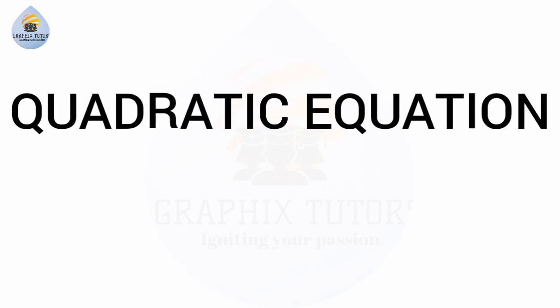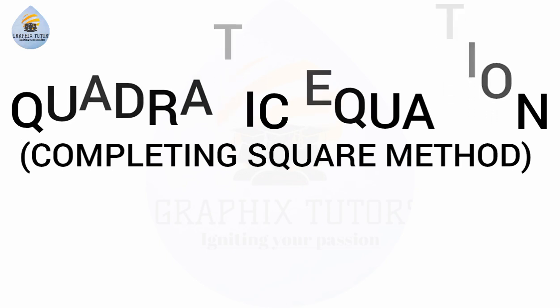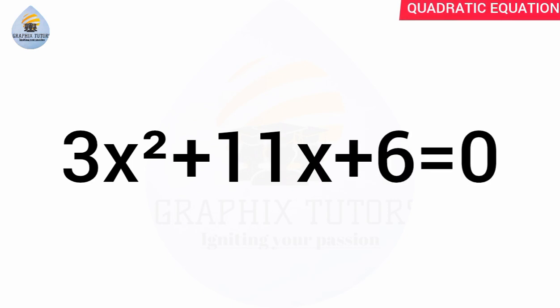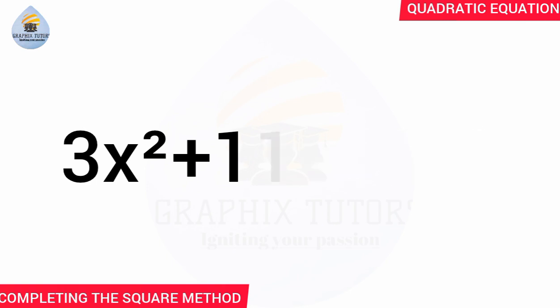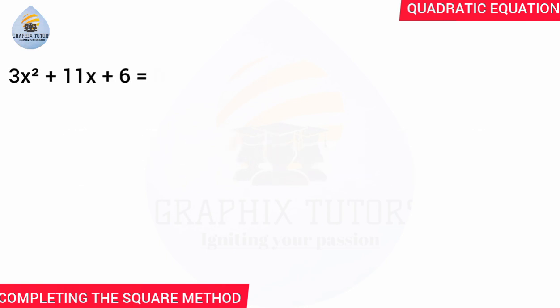Good everyone, my name is Graphics. If you look at the front of the screen, you see a question — that question is a quadratic equation and we're told to solve for the variable X. We're looking for the root of this equation. In this particular question, we are going to be using the completing the square method. We have 3x squared plus 11x plus 6 equals zero.